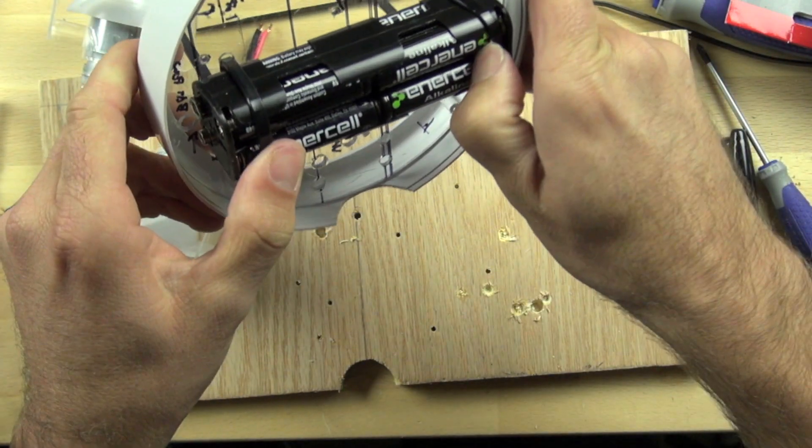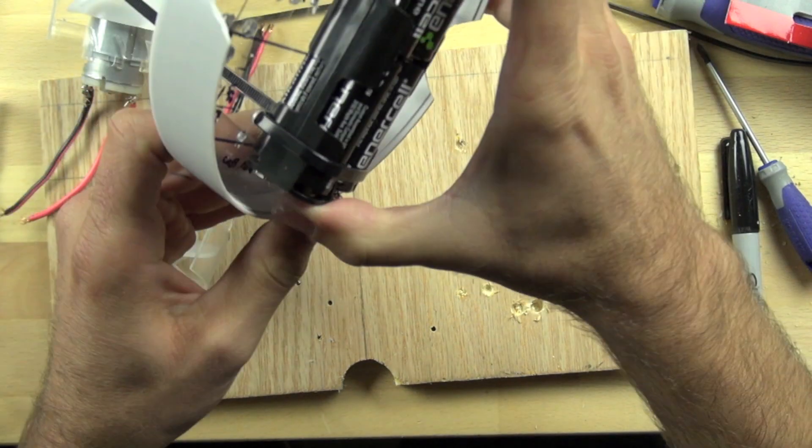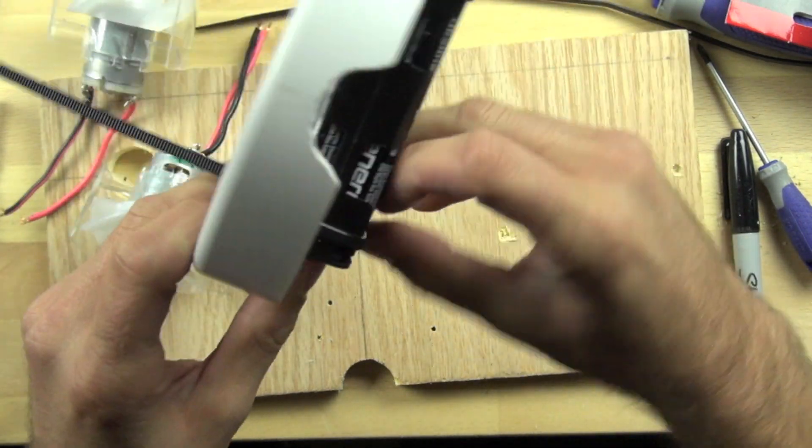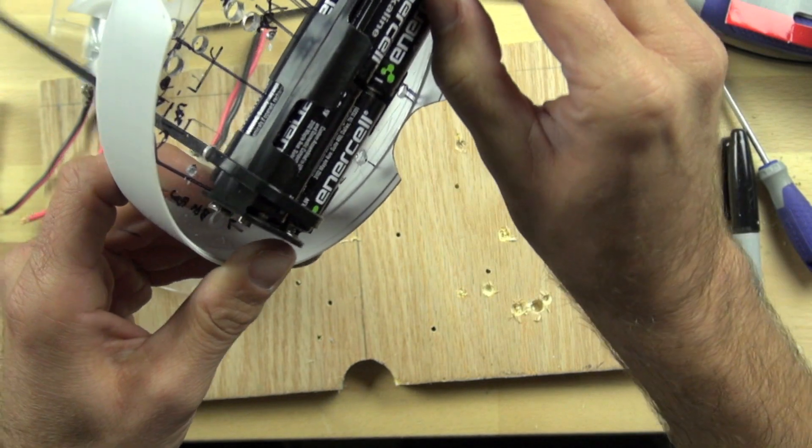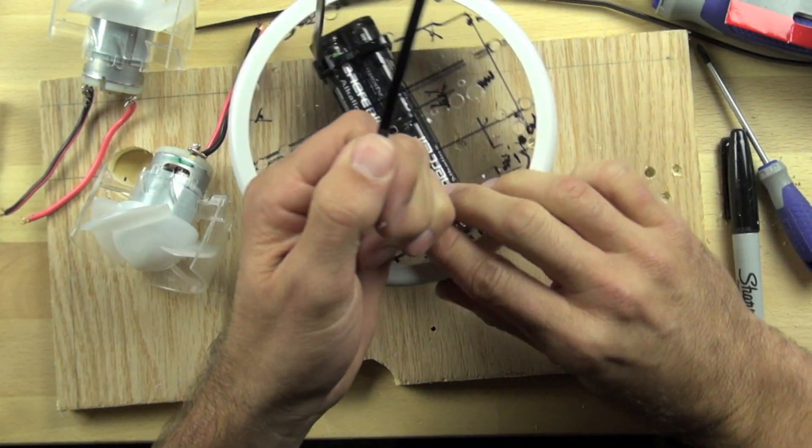When you need to take these out, you can press it over to the side and pull the batteries out. It's not super easy, but it'll hold them pretty well, and it's fairly inexpensive.